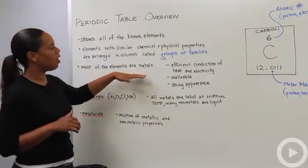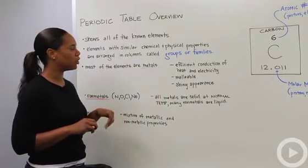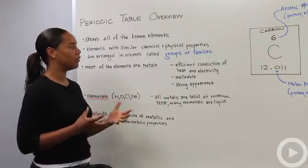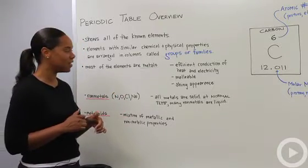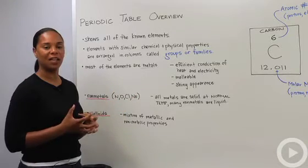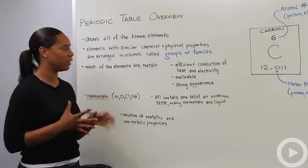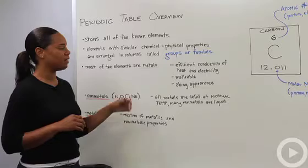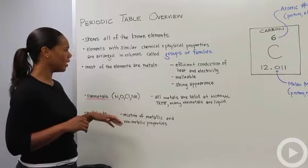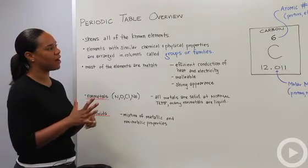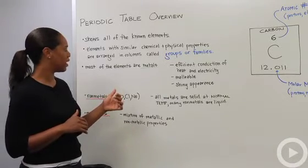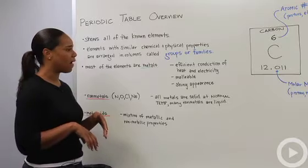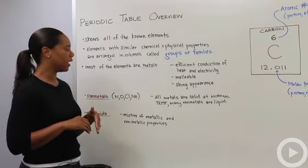Most of the elements are metals, shown in blue. Metals conduct heat and electricity, they're malleable, which means they're soft and you can kind of play with them, and they have a shiny appearance. Then we've also got the nonmetals in the top right-hand side of the periodic table, displayed in pink. Those are your guys like oxygen, nitrogen, chlorine, and the noble gases.